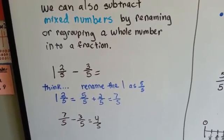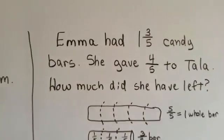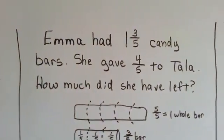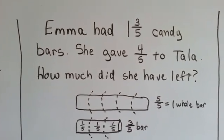It's almost like borrowing or regrouping in regular subtraction. So, Emma had one and three fifths candy bars. She gave four fifths to Tala. How much did Emma have left?